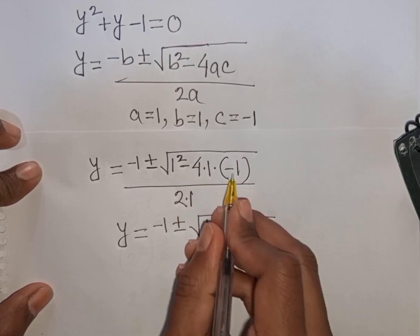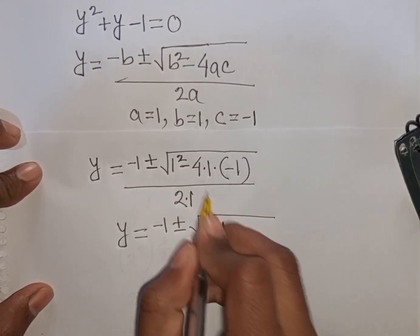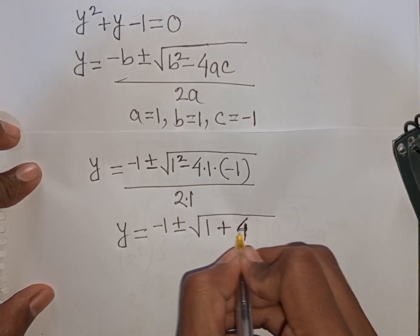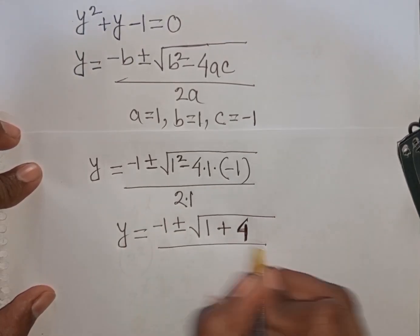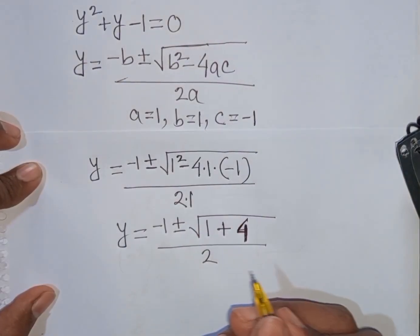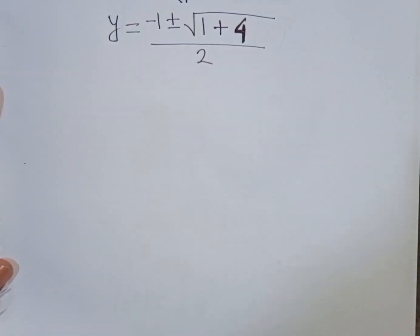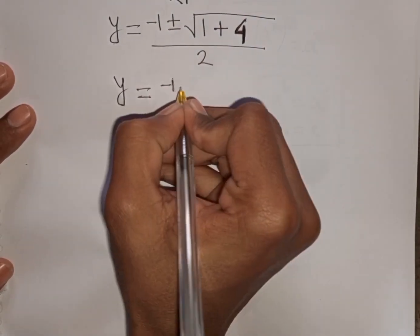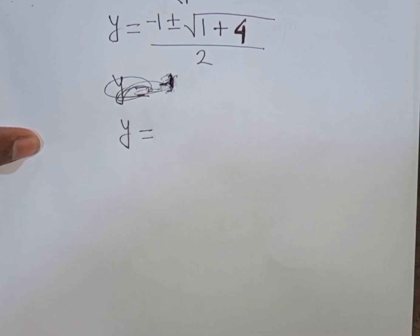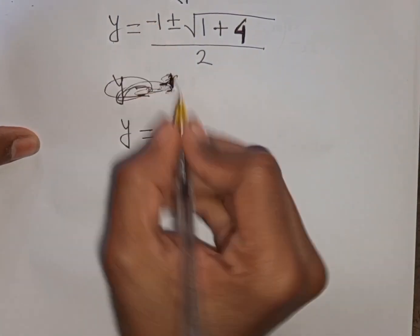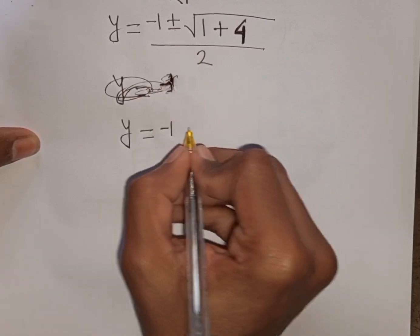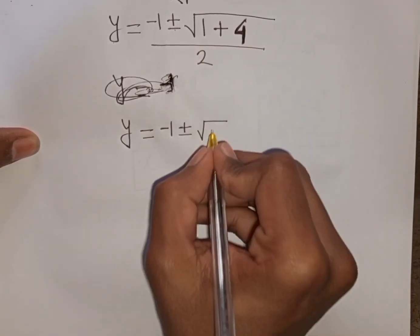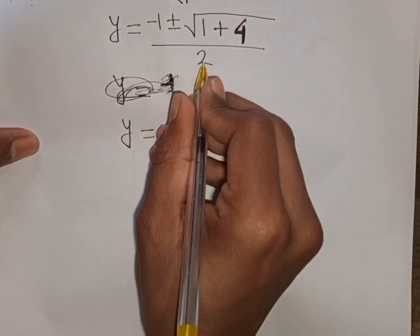Evaluating inside the square root: 1 plus 4 equals 5. So y equals minus 1 plus or minus square root of 5, divided by 2.